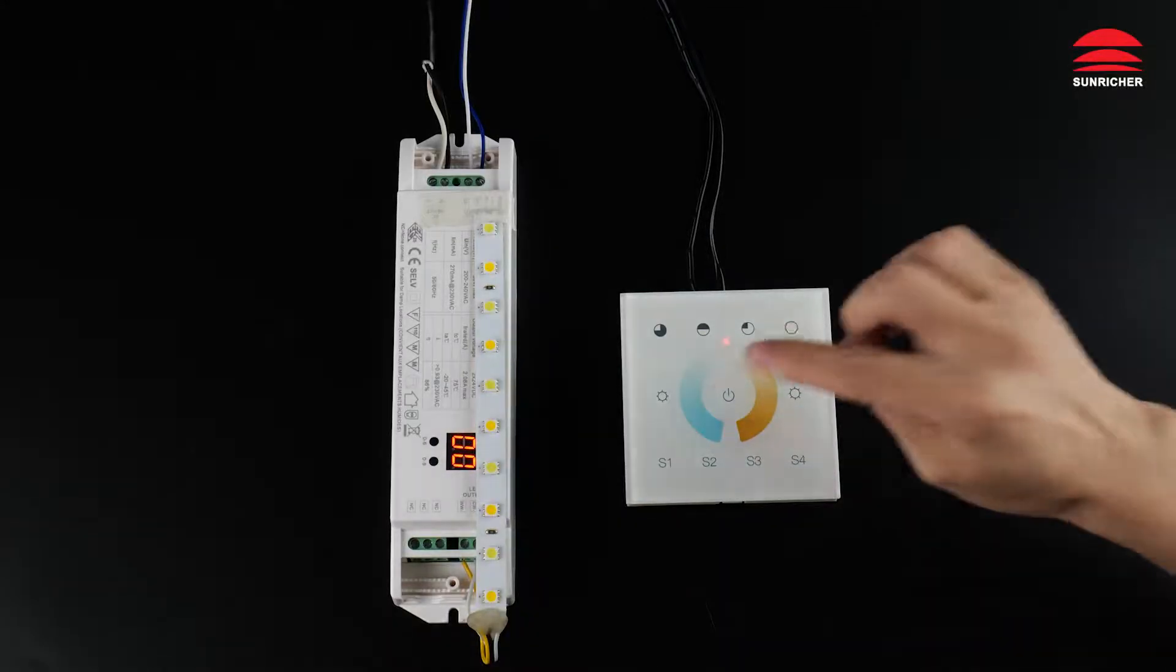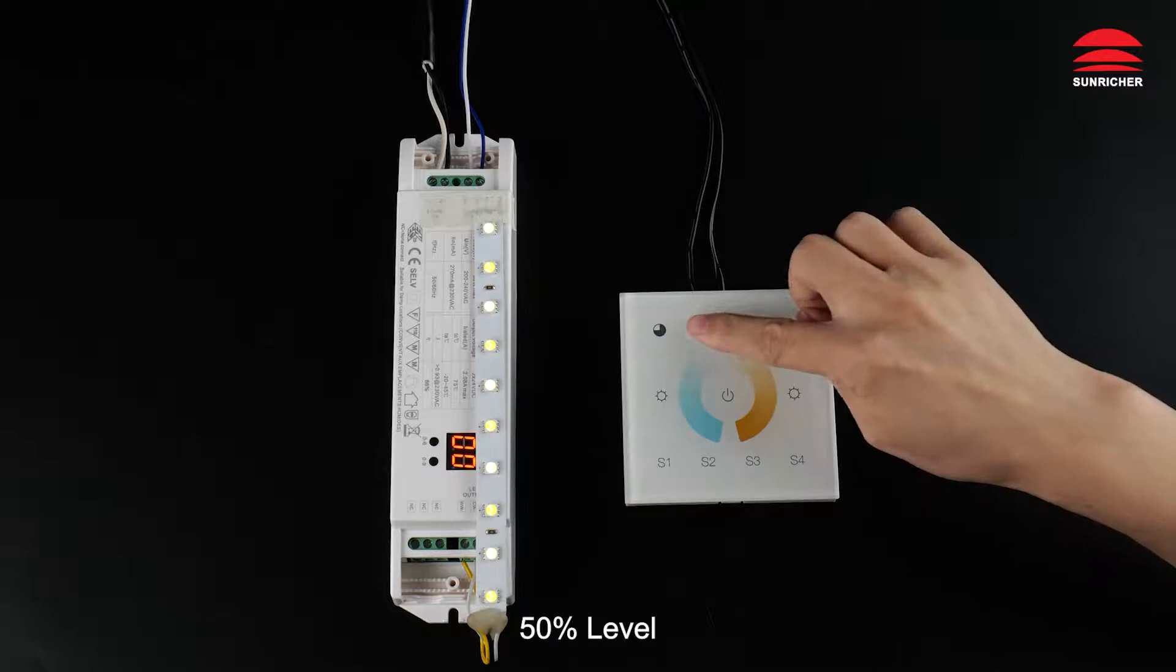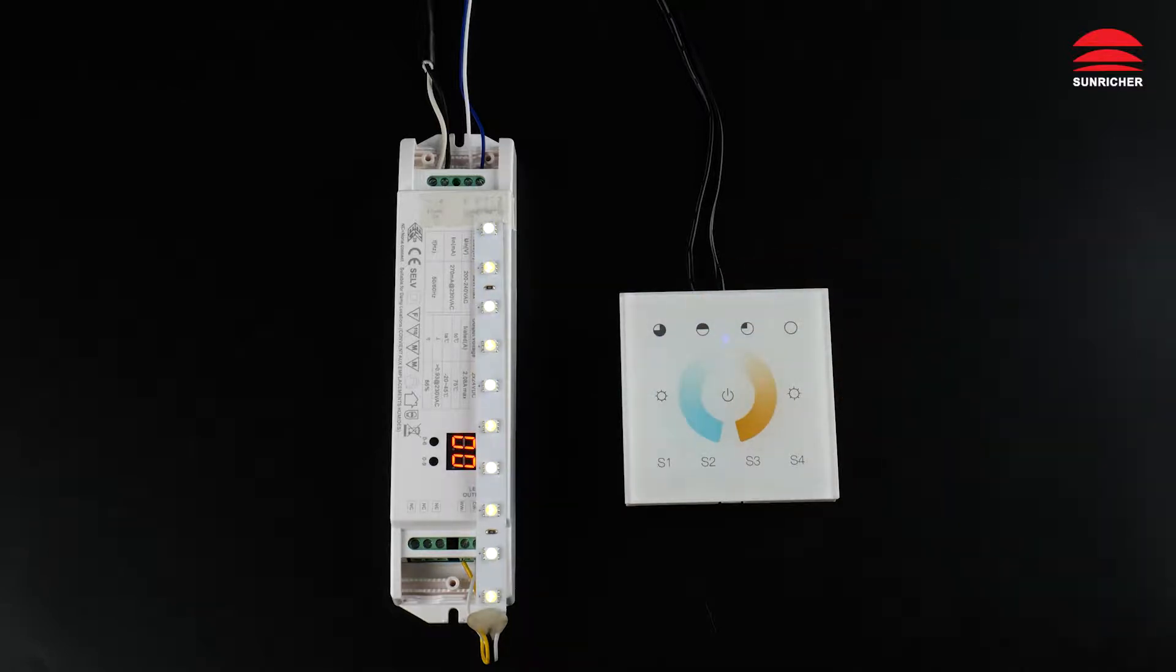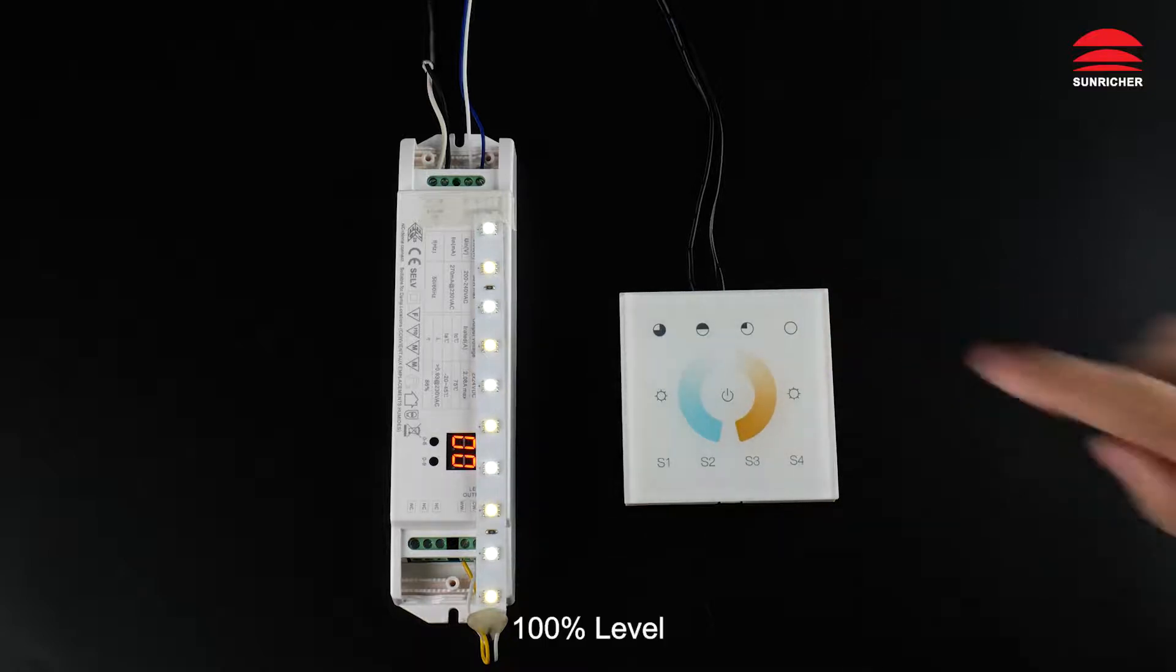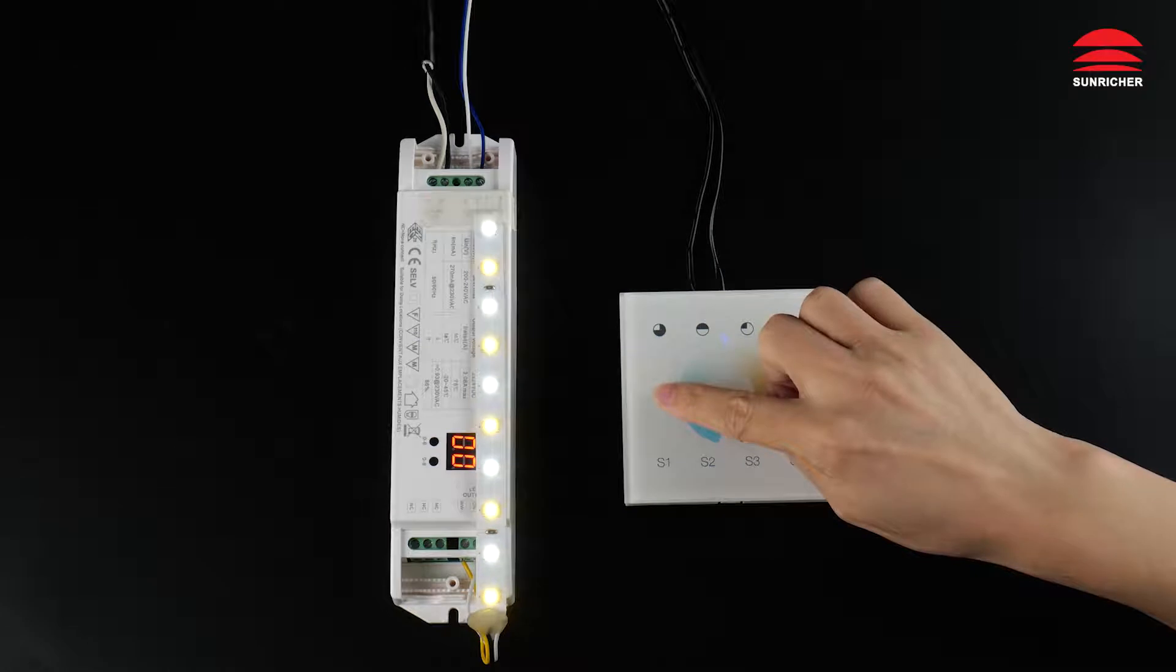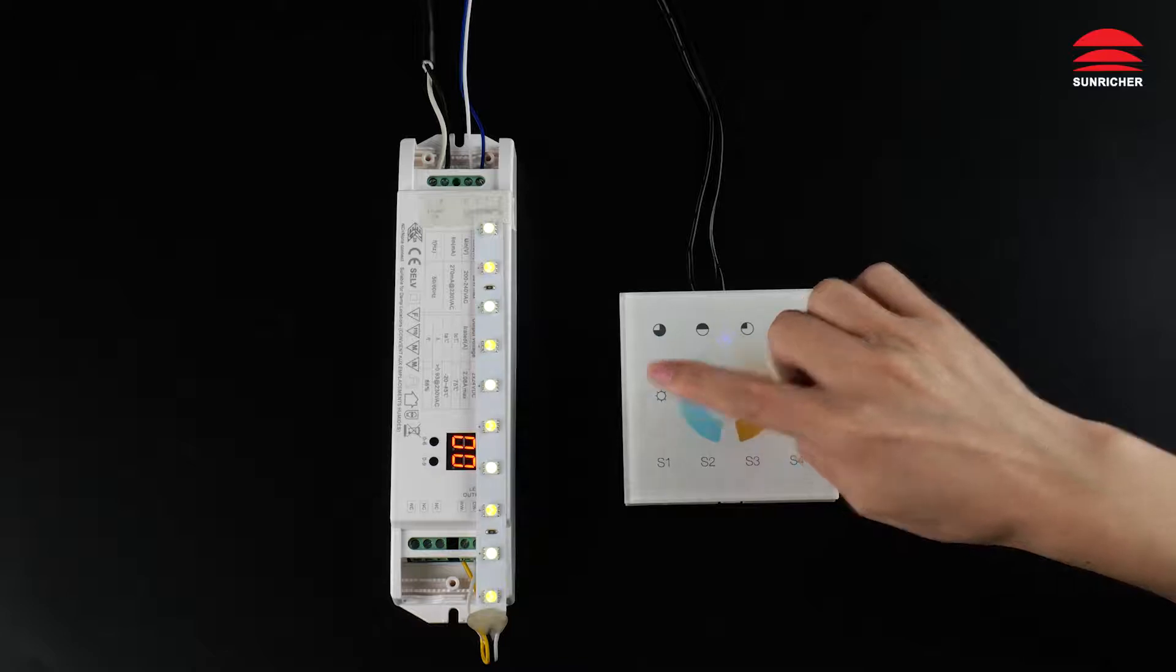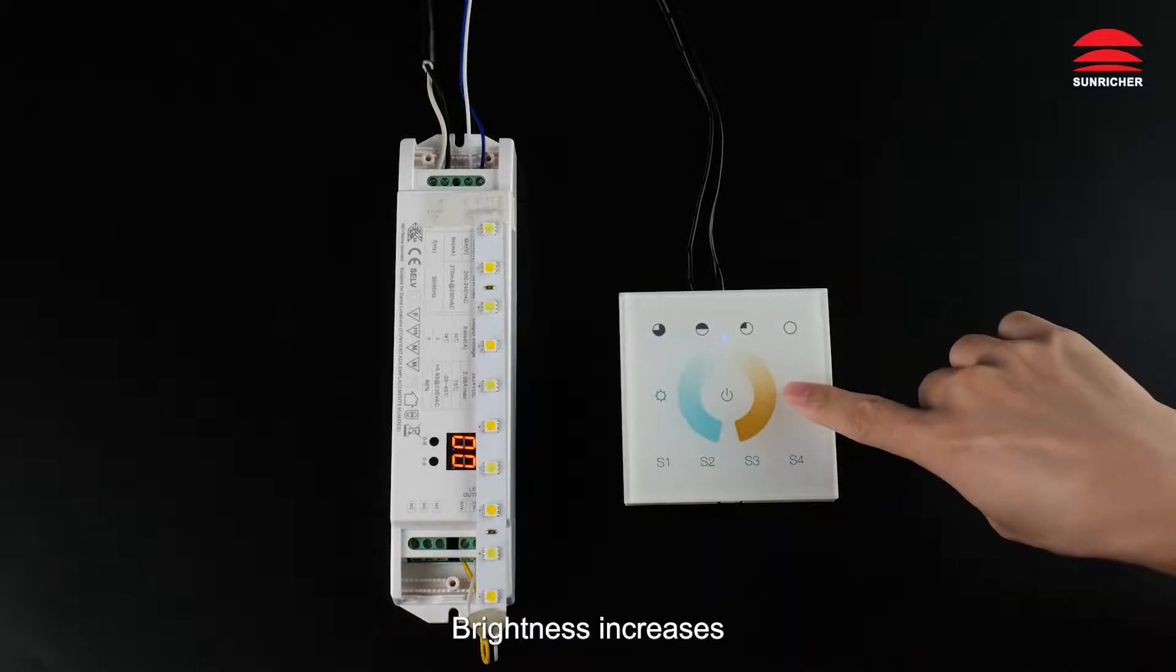Off, on, 25 percent level, 50 percent level, 75 percent level, 100 percent level. Brightness decreases. Brightness increases.